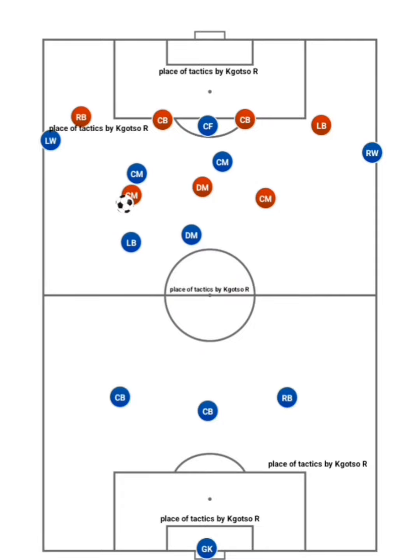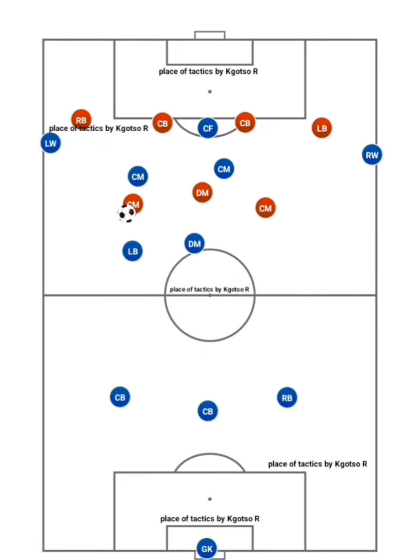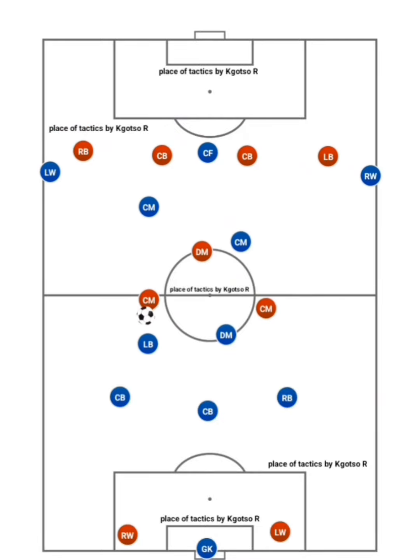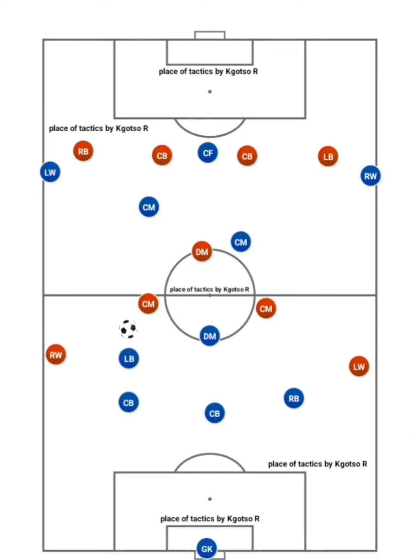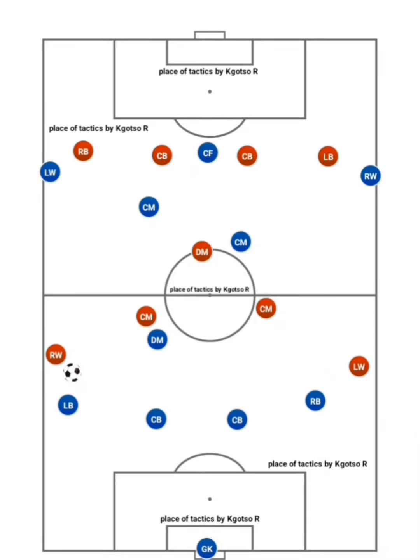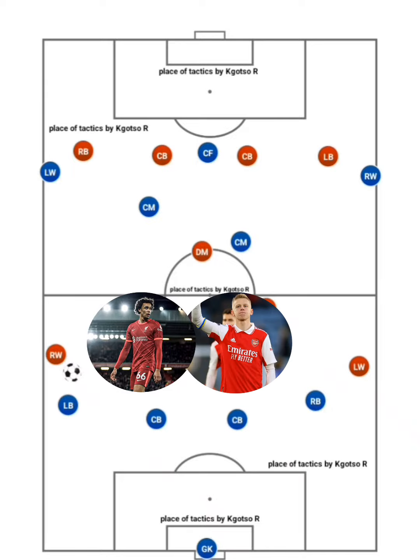On the defensive end, they tend to be quite solid — knowing when to back up the press, drop deeper into central areas, or fall back into their starting position as a fullback. Examples of these inverted controlling fullbacks are Alexander Arnold and Zinchenko.